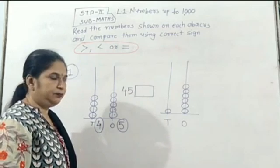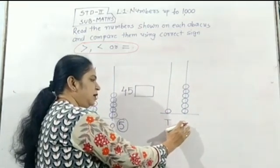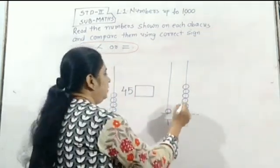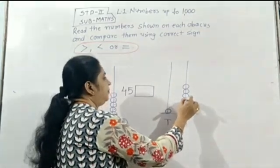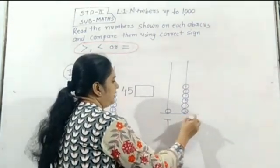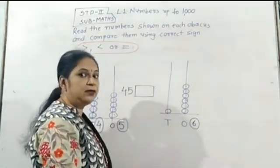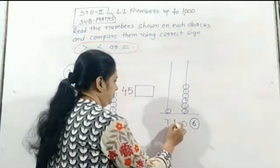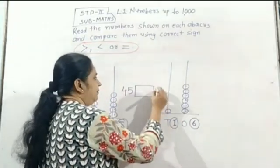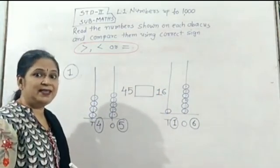Now the right abacus. Count the number of ones — you should also count, every time I will not count for you: 1, 2, 3, 4, 5, 6. So the ones number is 6. And what about the tens number? That is only 1. And now what is the real number? That is 1, 6 — 16.